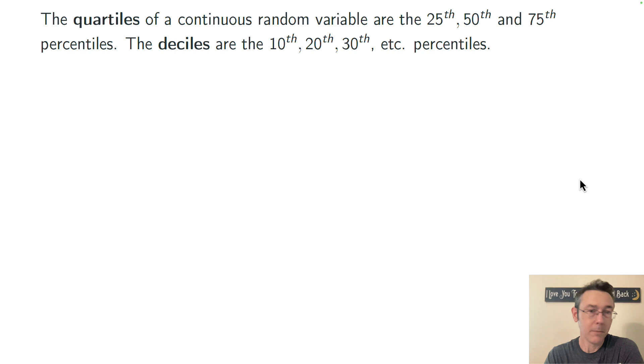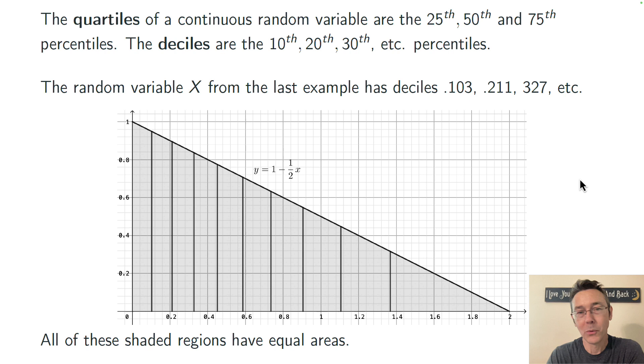A little more terminology. The quartiles of the continuous random variable are the 25th, 50th, and 75th percentiles. The deciles are the 10th, 20th, 30th, 40th, etc. percentiles. So taking that same probability distribution that we've been looking at, here I've labeled each of the deciles, 10th, 20th, and so on. And the point here is that all of these shaded regions have exactly the same area. Each one has an area of 0.10.